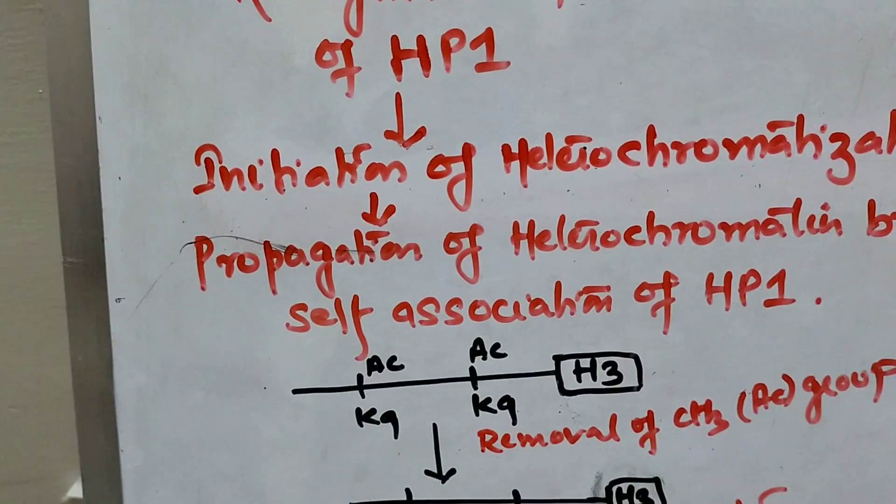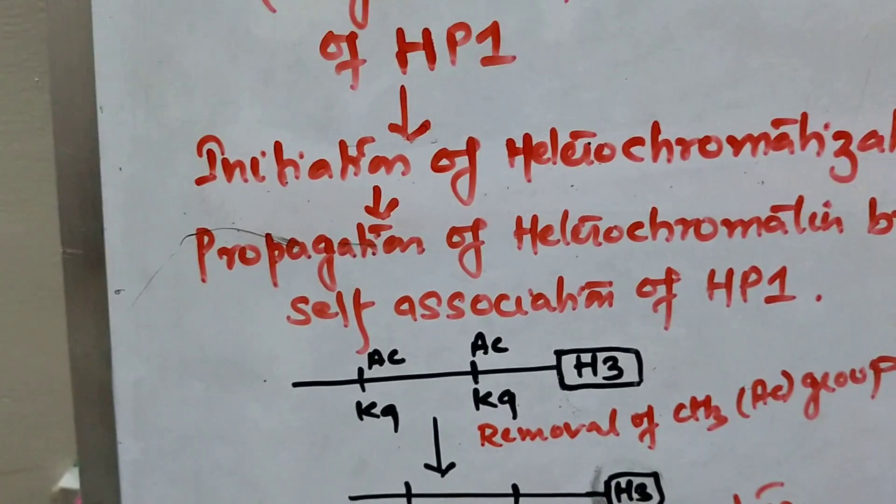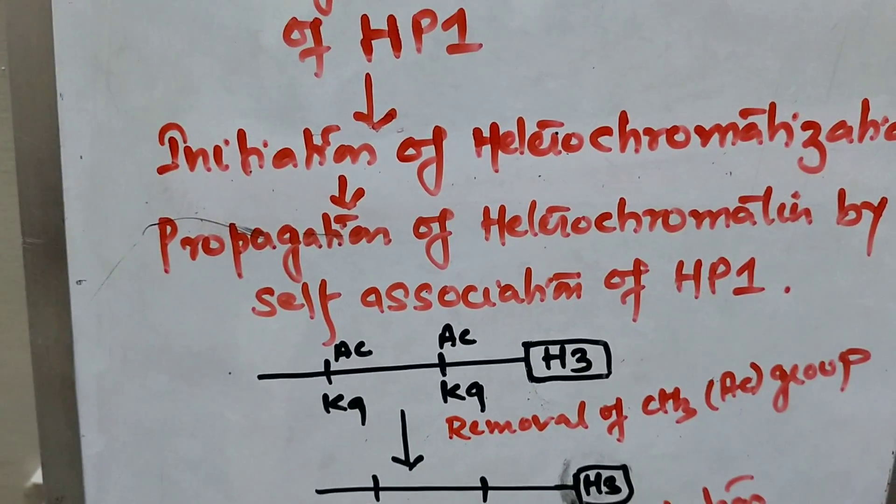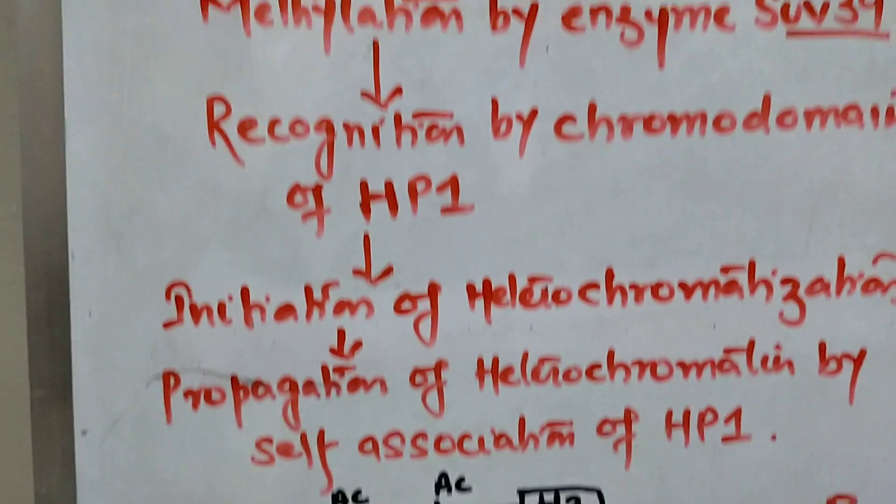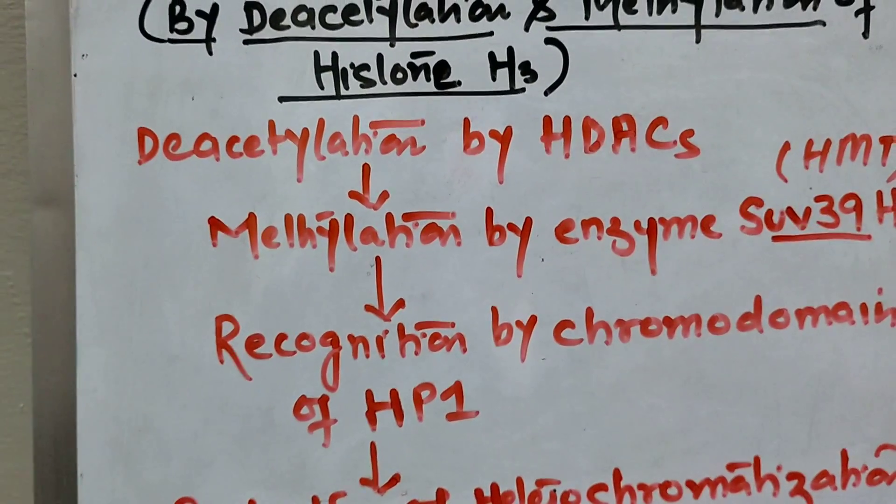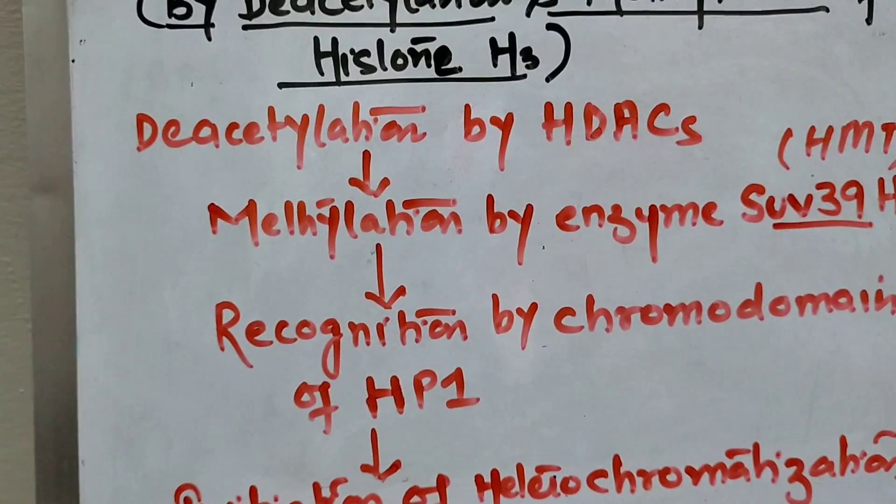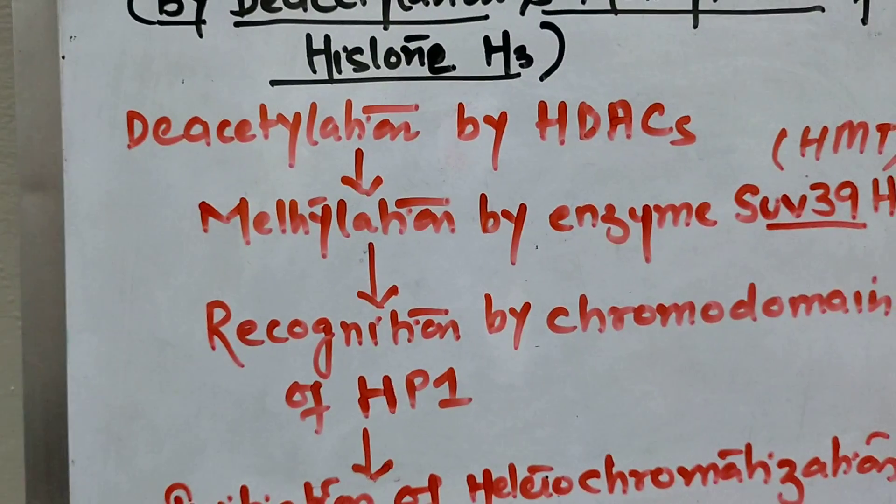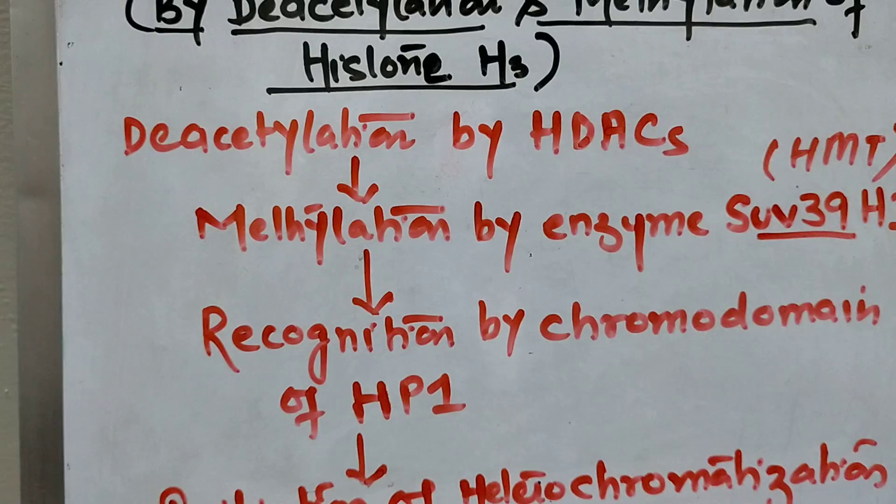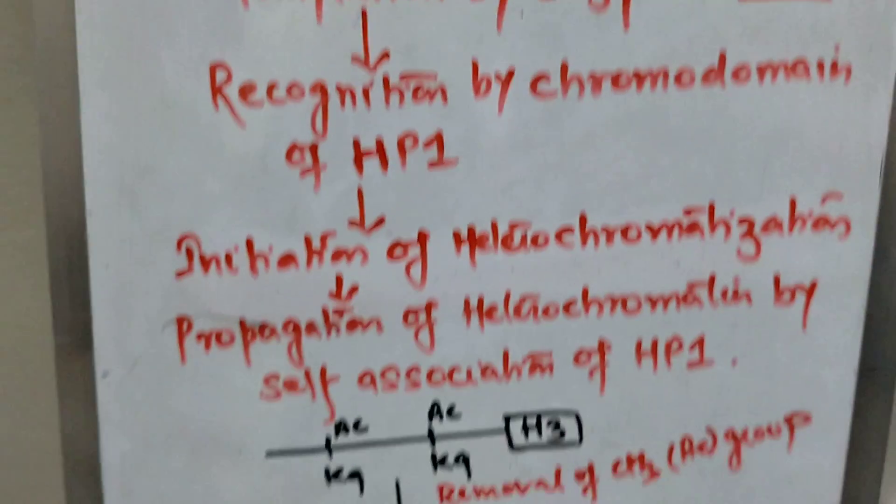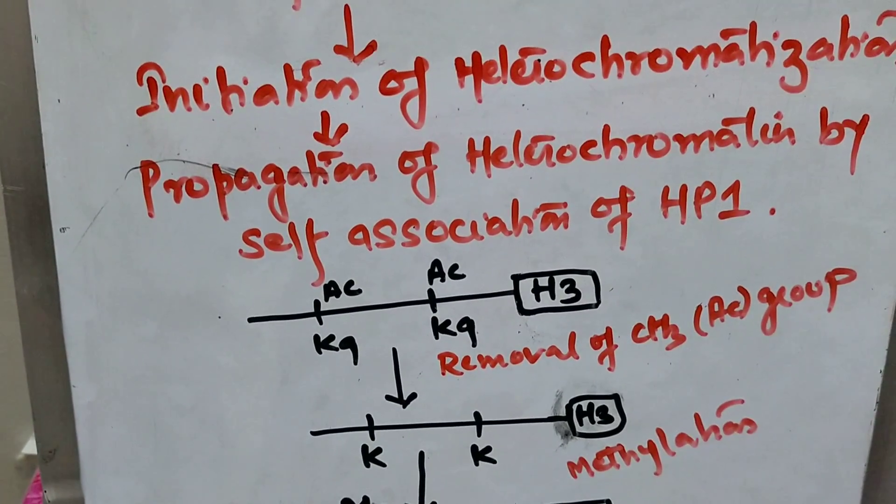Now if we want to convert it into heterochromatin, what do we have to do? We have to remove this acetyl group. So the first step is deacetylation by HDAC. Now HDAC is the activity of a particular enzyme, histone deacetylase. HDAC is never an enzyme, remember that. It is the activity of a particular enzyme. So what we have done? We have removed this acetyl group. You can see at the ninth lysine position.